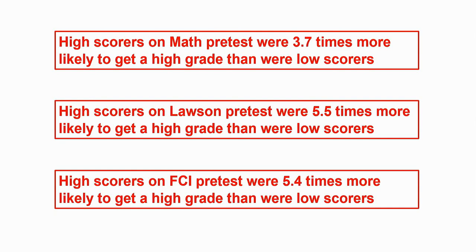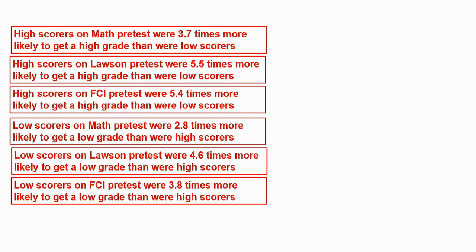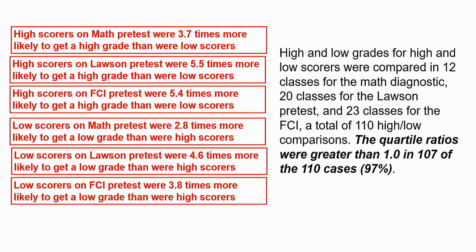What about getting low grades? Low scores on the pretest were much more likely to get a bottom quartile grade in the course than students who scored high on the pretest. The ratios are all in the three-to-four-to-five range. Out of a total of 110 comparisons, this pattern held in 97% of the cases examined — very consistent.